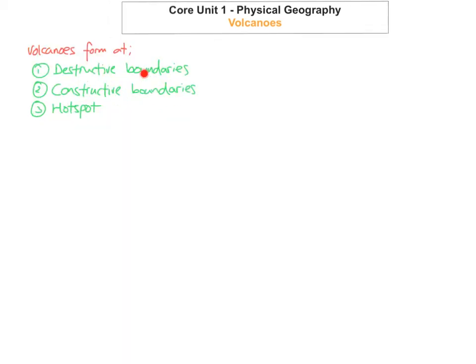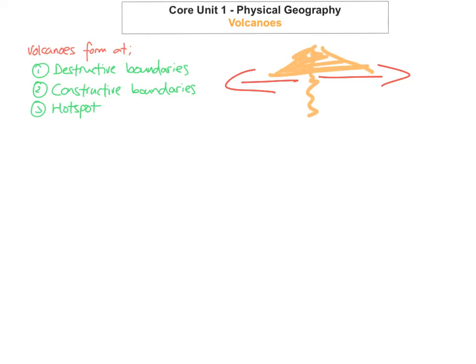The next one we're going to look at is volcanoes at constructive plate boundaries. Constructive plate boundaries are when plates are pulling apart. What happens is the magma is able to rise up between the crack relatively easily and will form a volcano. What you usually find at constructive plate boundaries are shield volcanoes.